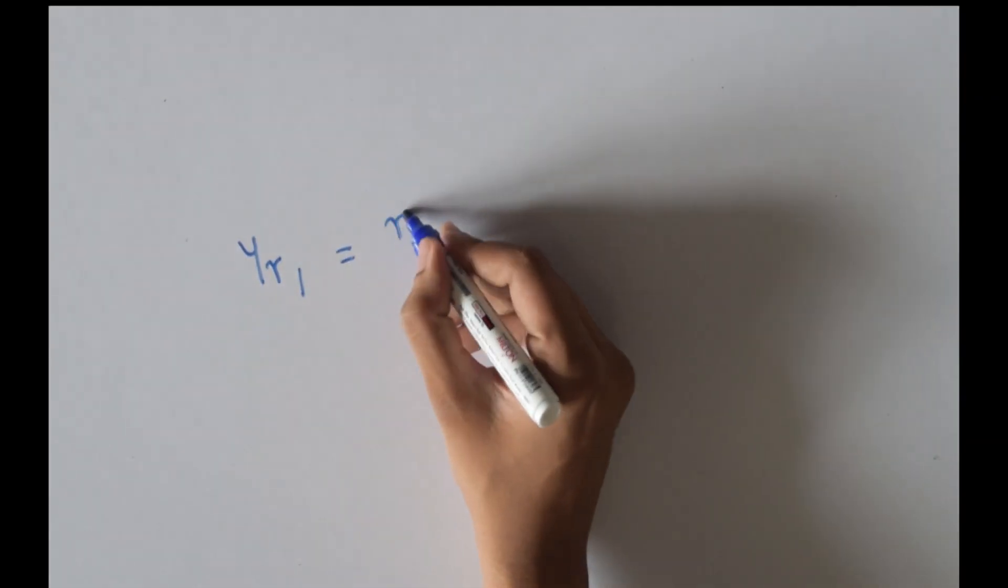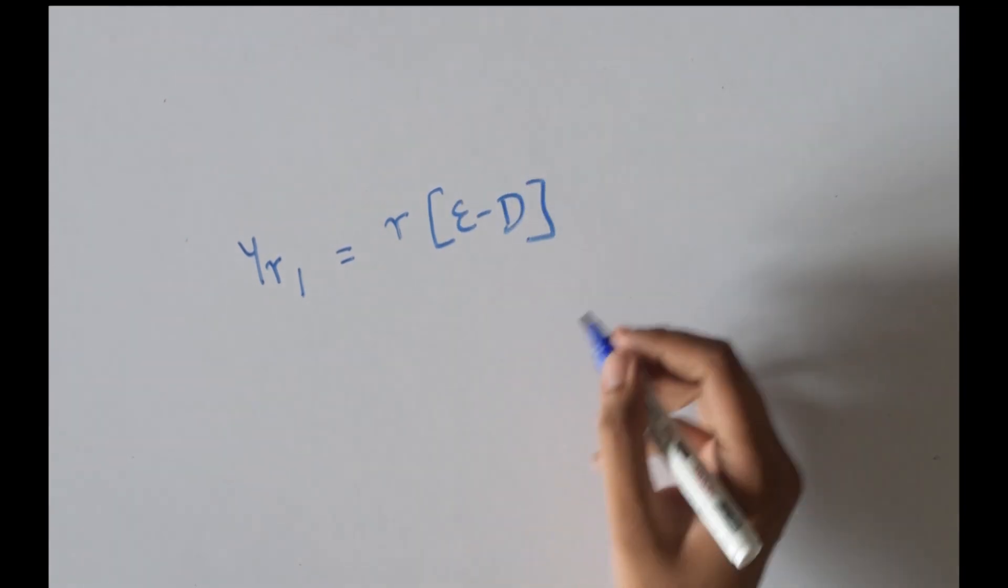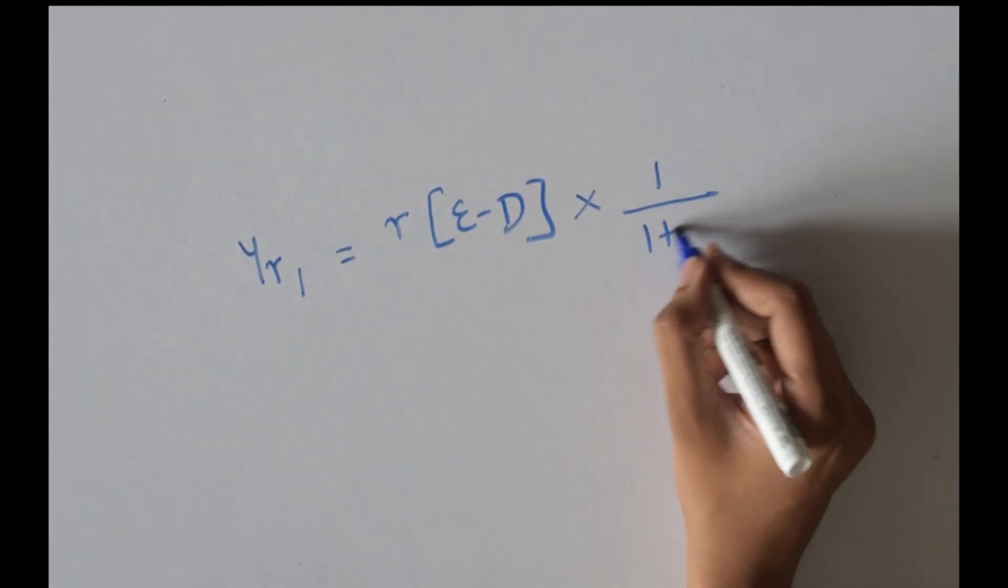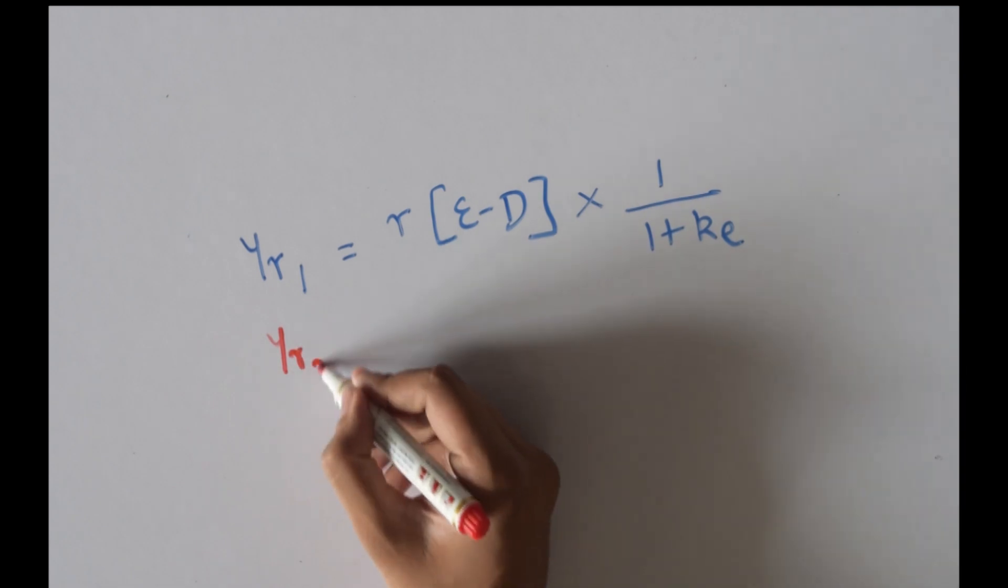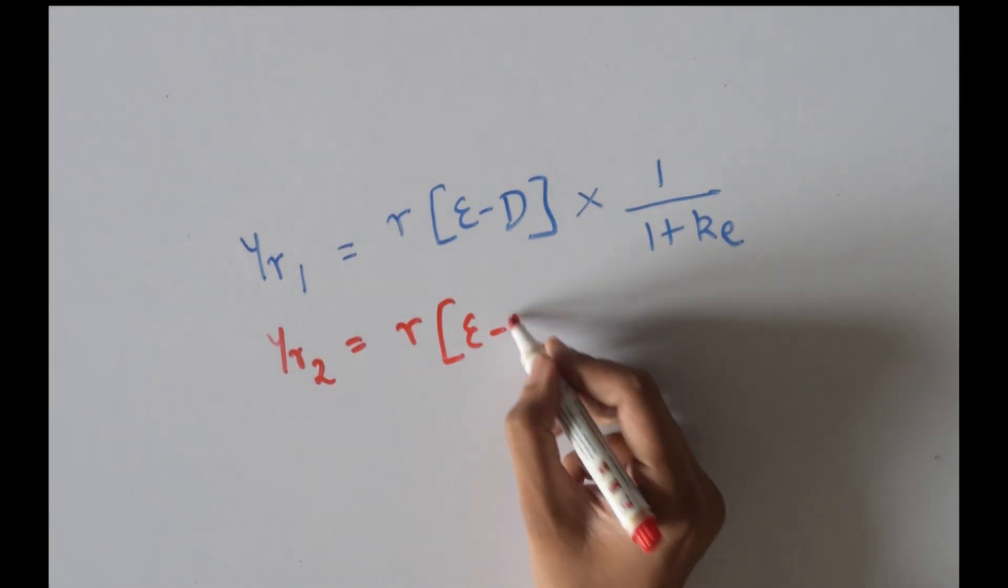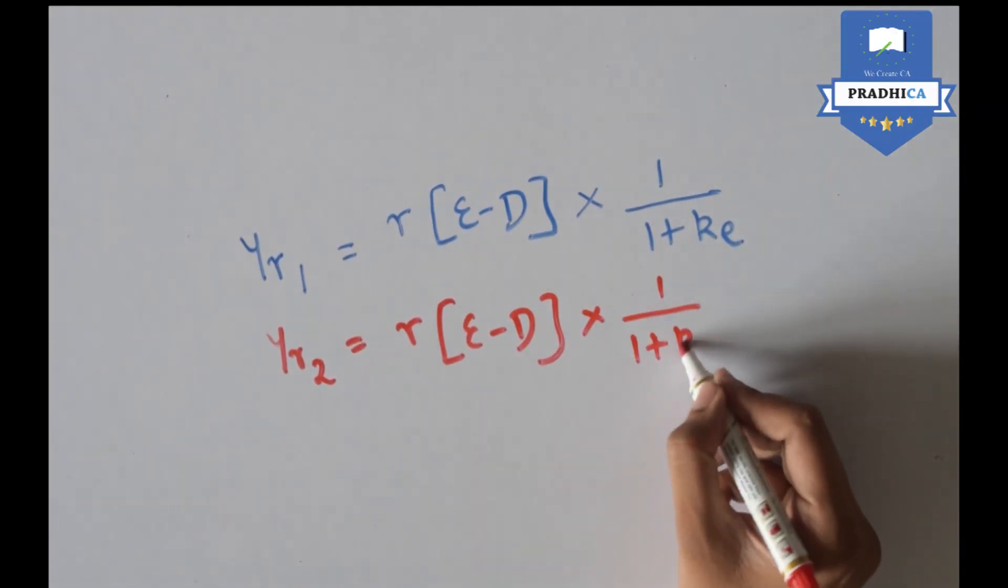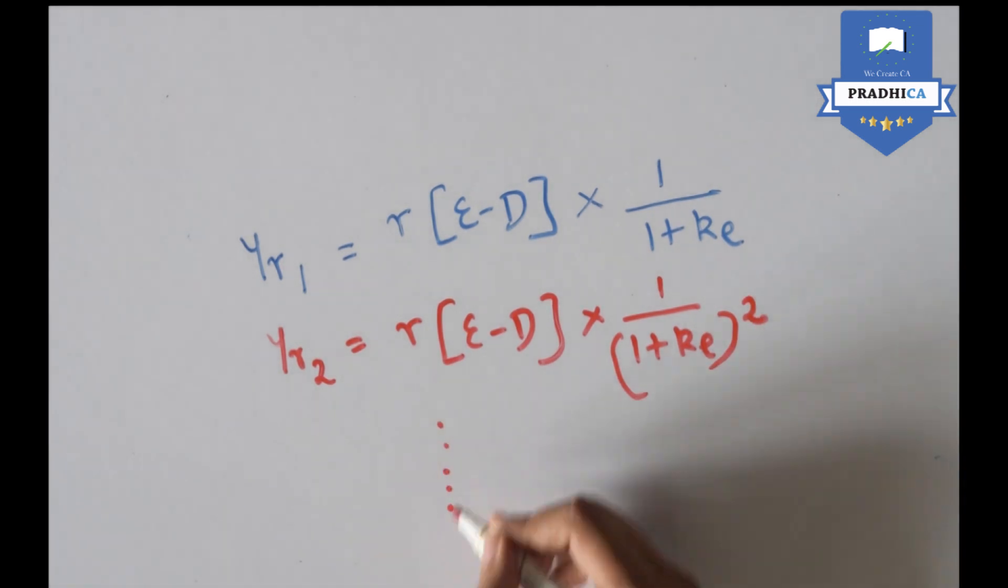We can find out the present value of this excess returns which are reinvested by discounting it using the cost of equity in each year. These returns continue till infinity.